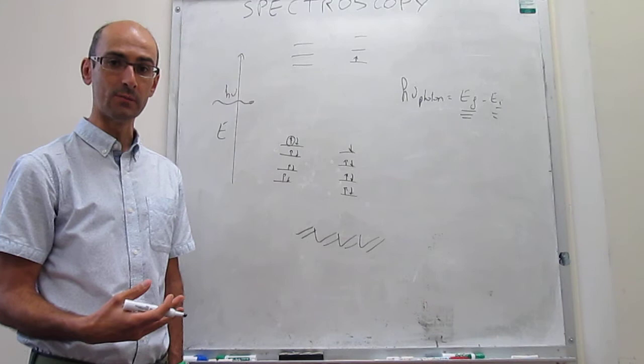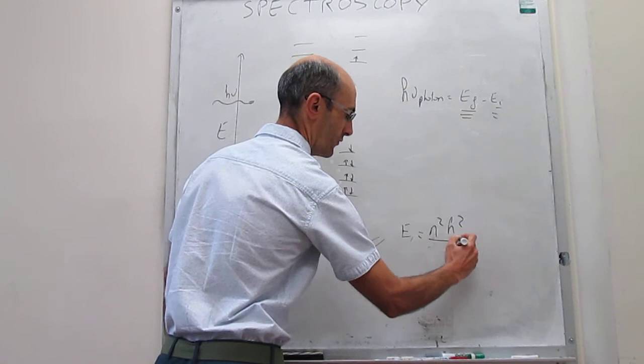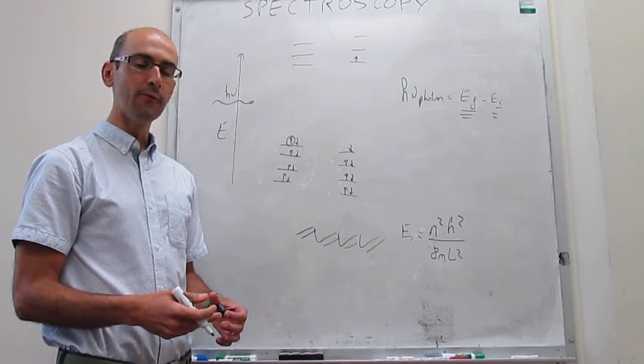For the pi electrons, we know the energies of electronic states. Those energies are n²h²/(8ml²), where n is the quantum number, h is Planck's constant, m is the mass of the electron, and l is the length of the molecule.